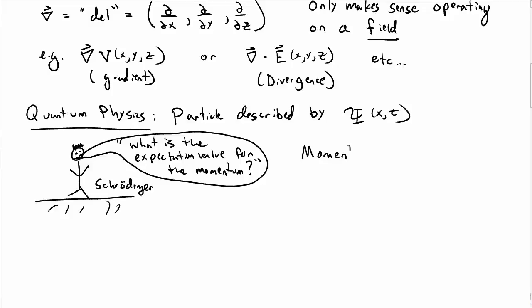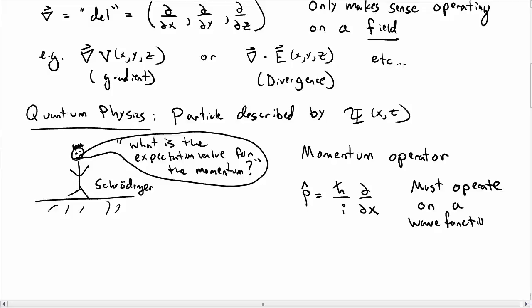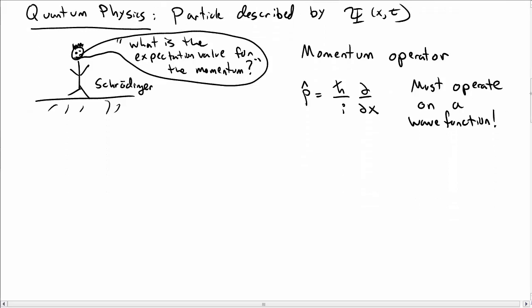And the way we might answer this is we would use the momentum operator, p hat, which as we've seen is h bar over i partial partial x. But again, this operator only makes sense when it operates on something. In this case, it has to operate on a wave function for it to make sense. So in particular, you could take p hat times capital psi, and then you get h bar over i partial psi partial x.